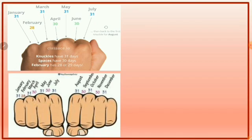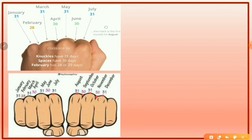We keep on counting — we had reached till July, which has 31. Now when you start with August, you will again start with the knuckle. So August will have 31. September 30. October 31. November 30. And December will have 31 days.